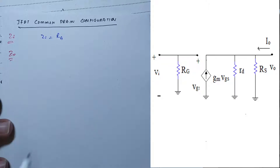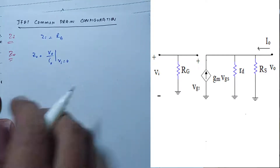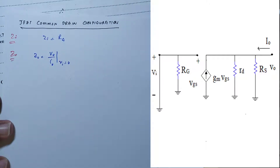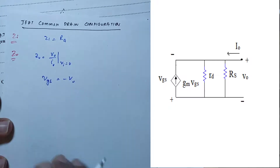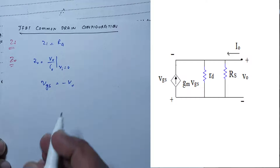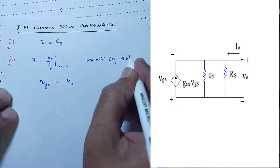We will start with the output impedance. It is found by setting V_input equal to zero. With the input connected to ground, VGS is basically equal to minus V_not. This is our key relationship, and we identify node A for KCL.